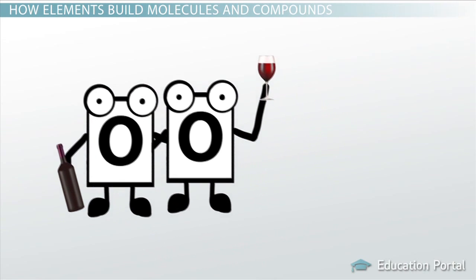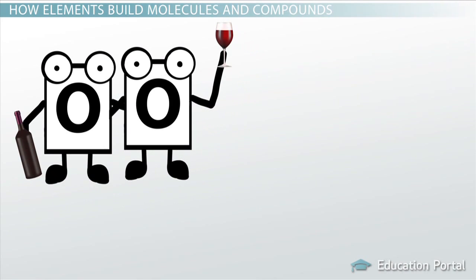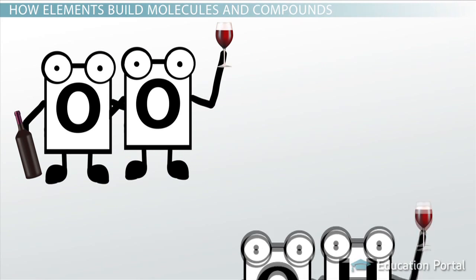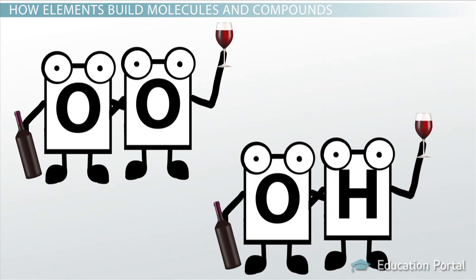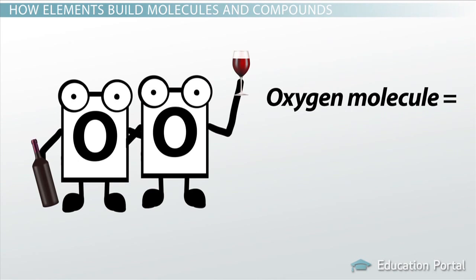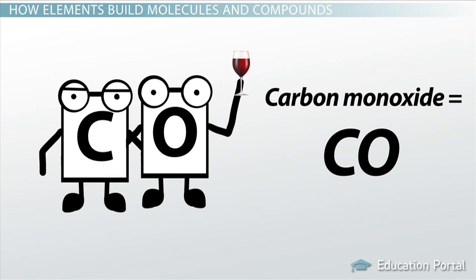Molecules can be comprised of atoms from only one type of element, or have atoms from more than one type of element. For example, an oxygen molecule is formed from atoms from only one type of element — oxygen. An oxygen molecule is abbreviated as O2 because it includes two oxygen atoms.